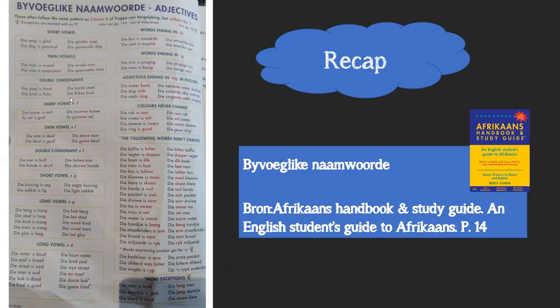Double consonants: if two consonants appear at the back of the word, then it only gets an e. So 'hard' becomes 'harder'. If the word ends on two consonants, you simply add an e at the back.